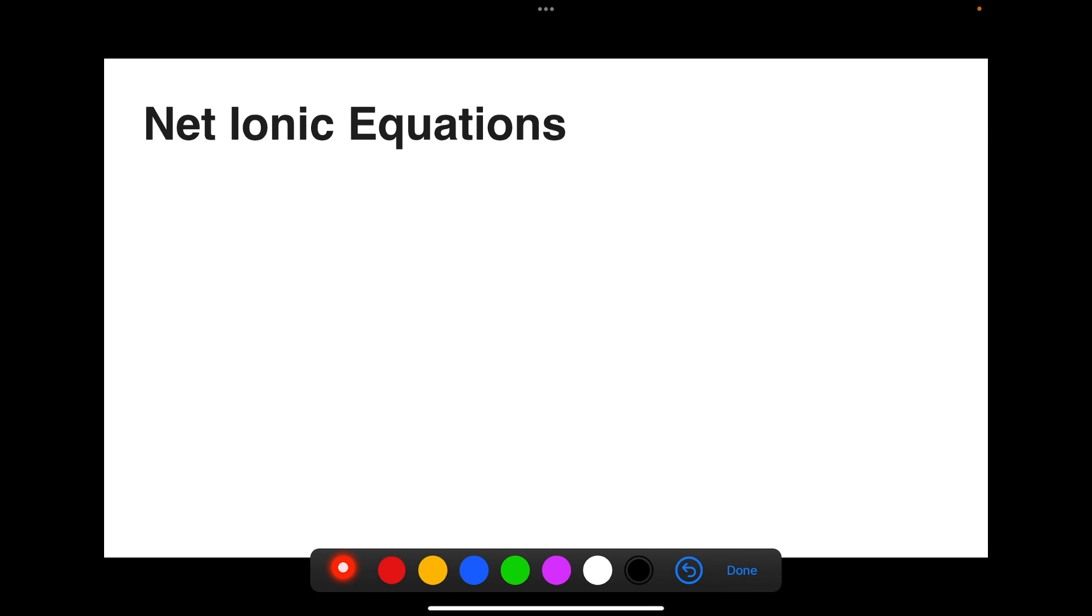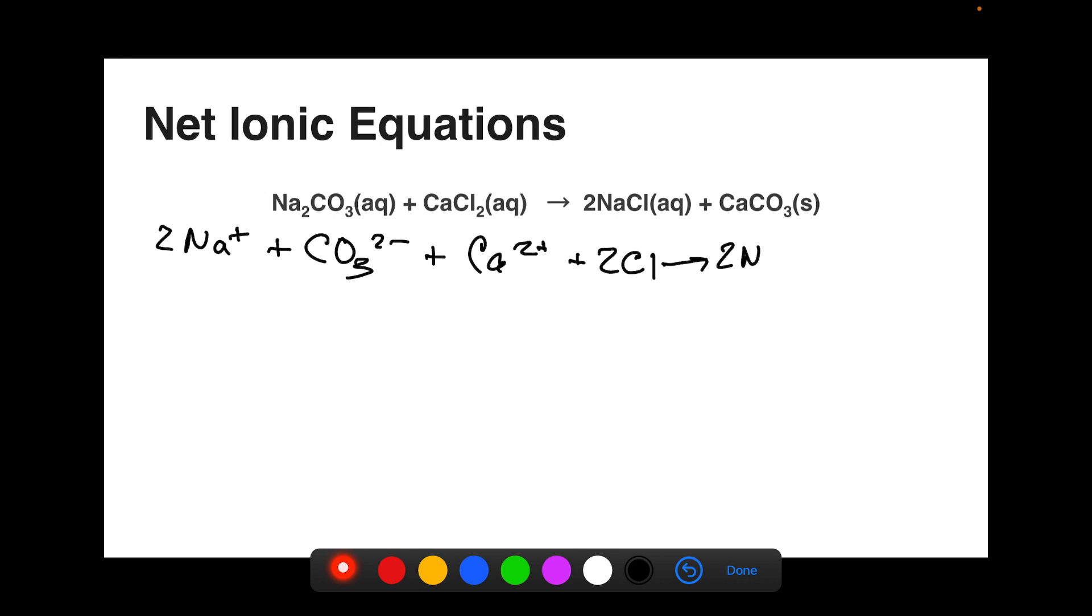Finally, let's consider a net ionic equation. Going back to our equation from before, I'm going to turn this into a complete ionic equation. So we've got two sodium ions, a carbonate ion, plus a calcium ion and two chloride ions. That's going to yield two sodium ions and two chloride ions, and our solid calcium carbonate.